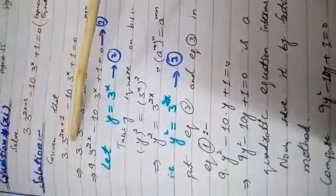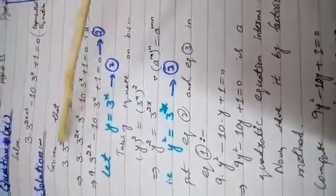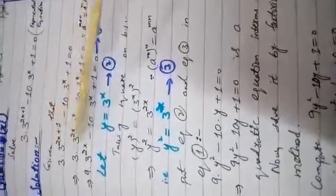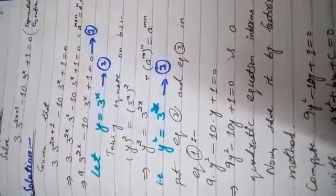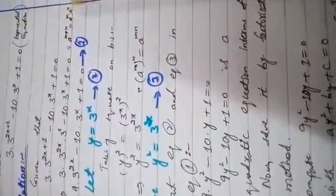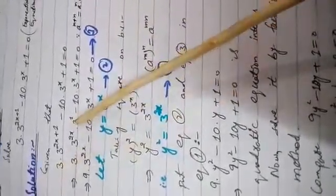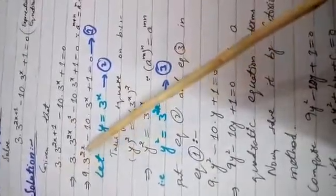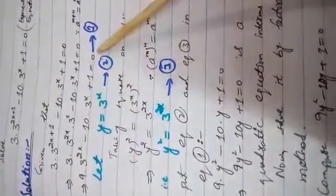3 into 3 power 2x a jae ga or 3 power 1 a jae ga. Same base ke saath power separate ho jaegi. Minus 10 into 3 power x plus 1 equal to 0. Exponential law use ki hai: a power m plus n equal to a power m into a power n. Implies that ye 3 multiply ho ke 9 a jae ga. 9 into 3 power 2x minus 10 into 3 power x plus 1 equal to 0.